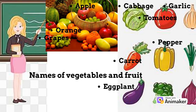Names of vegetables and fruit: grapes, orange, apple, melon, cabbage, tomatoes, garlic, carrot, onion, eggplant, melon, yellow pepper.